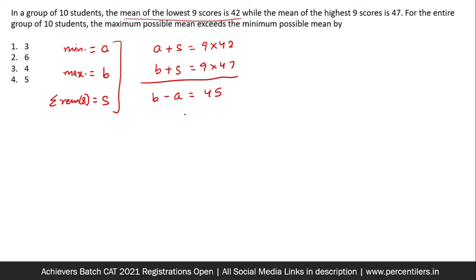Now this is the basic arithmetic that we could do for the question. Now the reasoning part that comes into the picture is as follows. Now they ask for the entire group of 10 students, the maximum possible average exceeds the minimum possible average. So basically we have to find A plus S plus B by 10, its minimum value and maximum value. Now as you can see that we could not find the values of A and B, but we could just establish an equation between them.